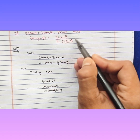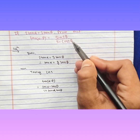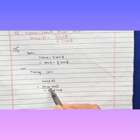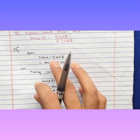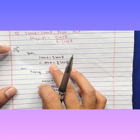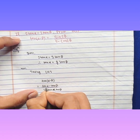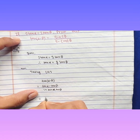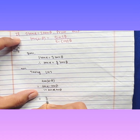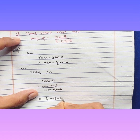On the RHS we only need beta form, so we have to change all alpha terms into beta terms. I will replace tan α with (3/2) tan β. So the numerator becomes (3/2) tan β minus tan β.